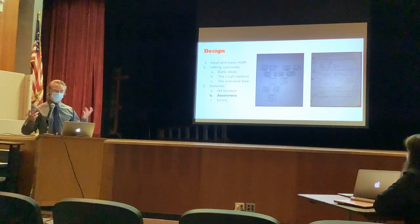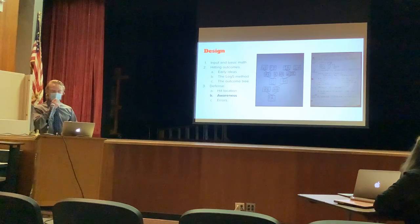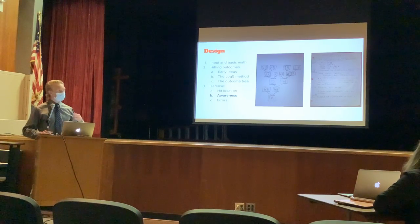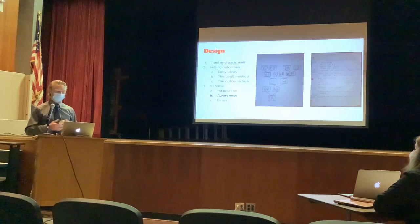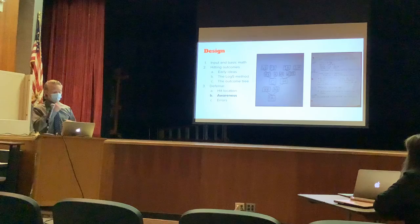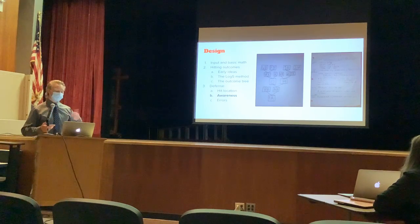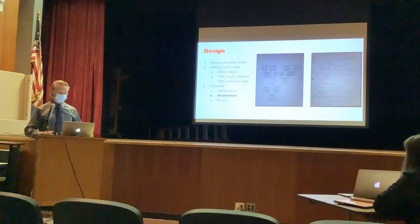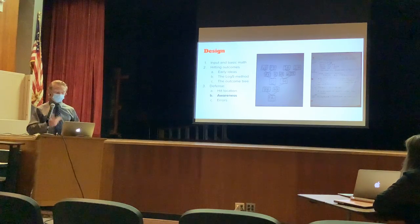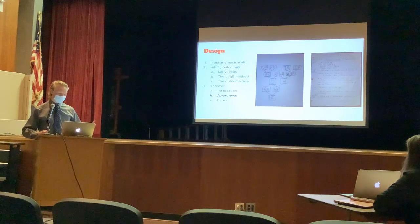Early ideas were to take statistics and average them together, but that unfortunately doesn't work. What I ended up using was a version of the log-five method, which is essentially a way to take a batter-pitcher matchup and figure out what the outcome would be. The only problem is that method can only give you a yes or no answer. That led to the outcome tree, shown on the left side, which essentially had two options at every stage and would go until a final decision was reached.